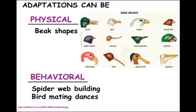Adaptations can also be behavioral. Remember, any inherited characteristic counts — and some organisms inherit behaviors. Spiders hatch knowing how to build webs; building a web to catch insects is a behavioral adaptation for getting food. Mating dances are another example — birds hatch knowing the dances they need to attract a mate. That's something the bird does, rather than something physical about its body.